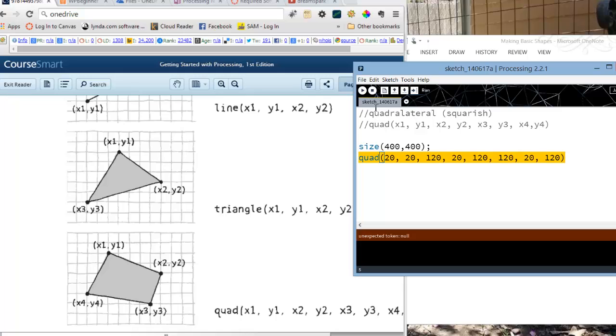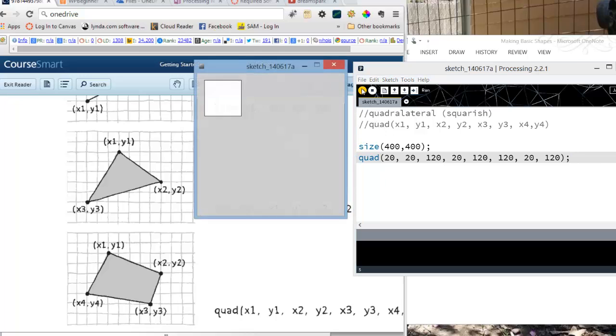No big deal. It's not a lot of effort to change it if I'm wrong. Oops, forgot my semicolon. It'll tell you unexpected token null. Let's try that again. And there we go. I have a nice little square.